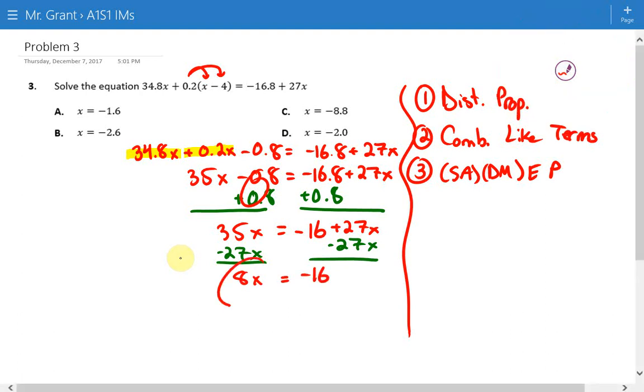Now notice we have all the x's on one side, everything without an x to the other. There's no more addition or subtraction attaching anything to x. There's just an 8 that's multiplying. So we can undo that by dividing by 8, and we end up with x = -2.